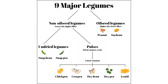You can see here in this diagram that we're looking at nine major legumes — there are other types, but these cover the major ones for production and consumption worldwide. Looking at these legumes, you can see that the first division is basically into non-oilseed legumes and oilseed legumes. The oilseed legumes, as you might guess from their name, have a higher oil or fat content and they're lower in fiber compared to their non-oilseed legume counterparts.